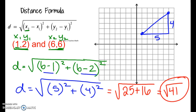So again, the distance formula is essentially the Pythagorean theorem. It looks complicated because now we have coordinate points involved — we don't just have a side length of a triangle — so that's why it looks a little more confusing.